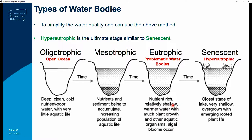Eutrophic waters are nutrient-rich, relatively shallow, and generally warm because there's so much material absorbing light and keeping energy inside. There's much plant growth, other aquatic organisms, and in most cases algal blooms. Lake Victoria is a good example — in the region where we took field survey samples, one can identify it as eutrophic. Beyond that, you have hyper-eutrophic or senescent waters — the oldest stage of a lake, very shallow and overgrown with emerging rooted plant life.